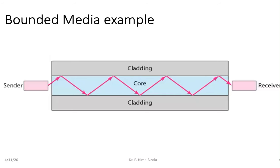The electromagnetic wave passes through the core, but the cladding surrounding it acts as the boundary. The movement of the electromagnetic wave is restricted because of the cladding material. So we call this bounded media — the core is the medium and it is bounded by the cladding.